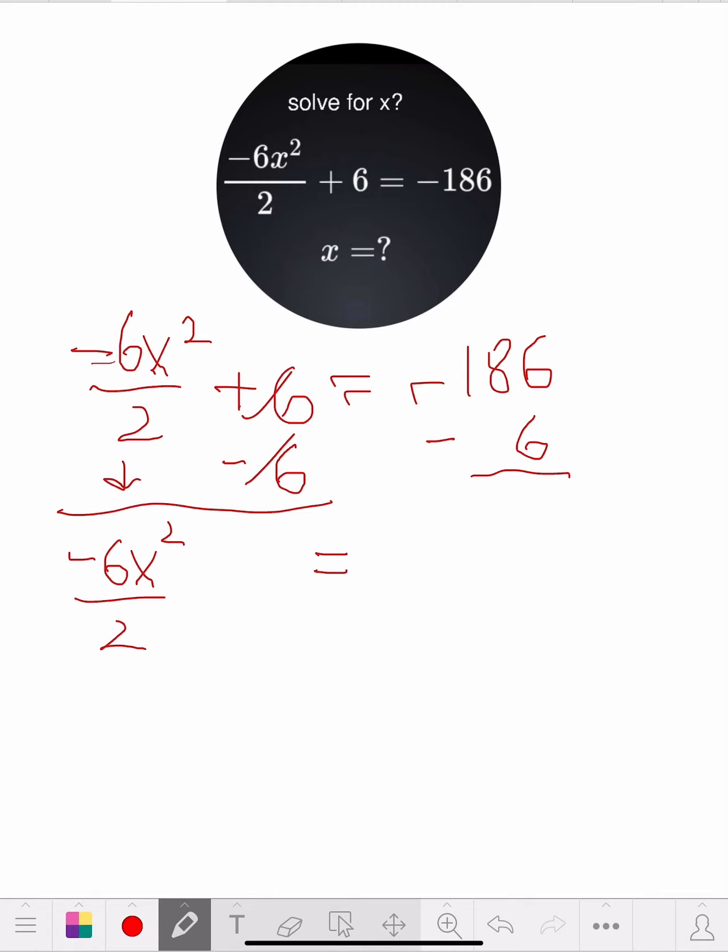We got negative 6x squared over 2. These two cross each other out, positive 6 and negative 6. The equal sign comes down. Now we've got negative 186 and we're subtracting 6 from it, so that means we're going even further left. We're going to have a negative 192.